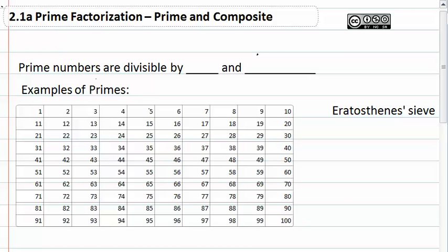2.1a, prime factorization, prime and composite. Prime numbers are divisible by one and itself.